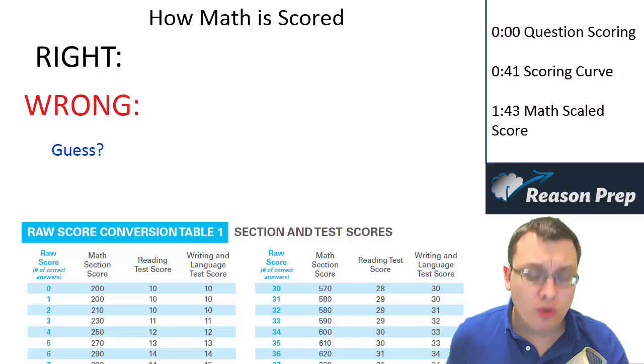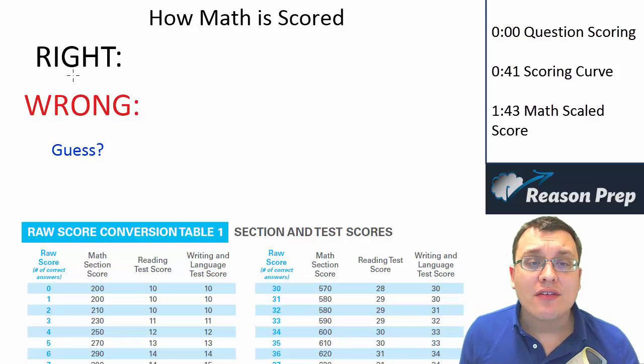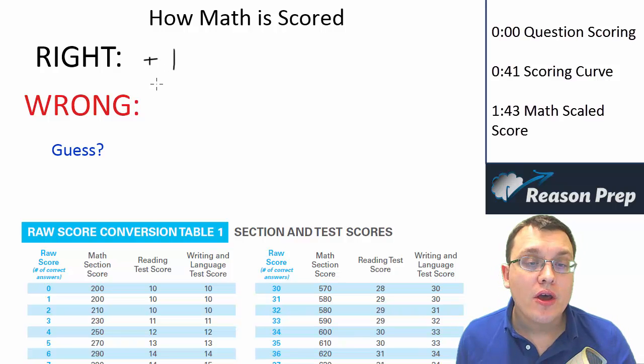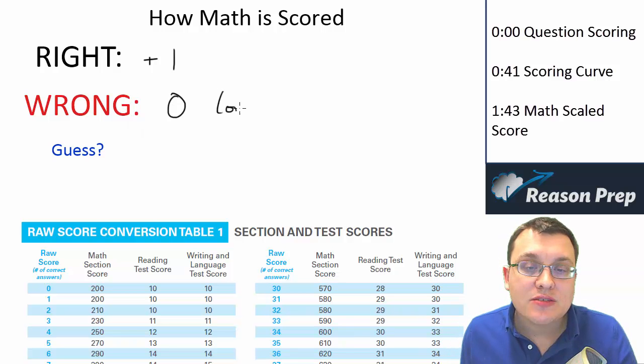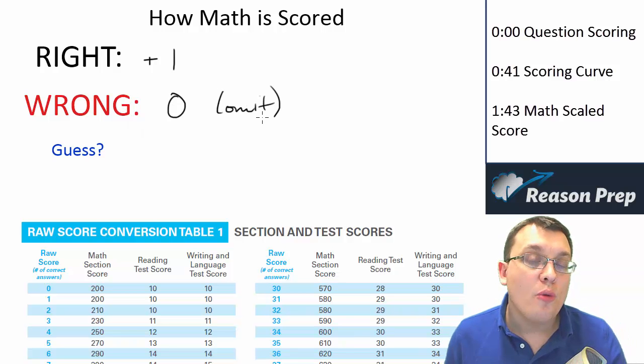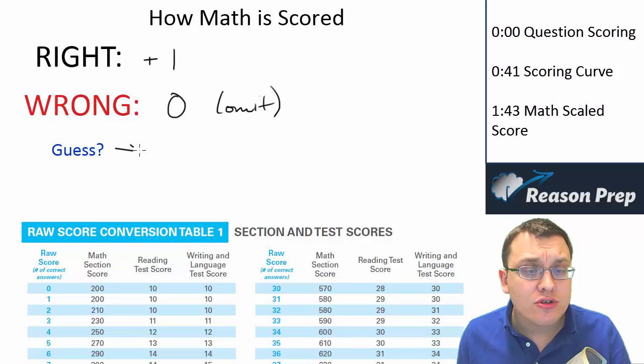Let's talk about how the math test is scored. For every right answer you get, you're going to get a plus one to your raw score. For every wrong answer you get, you're going to get no credit, which is what you would expect. This would also be true if you omitted it, so if you left it blank you would get no credit. So in terms of guessing, you should always guess.